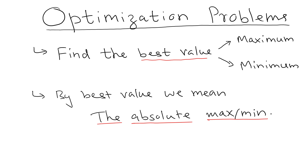When we say best value, we mean the absolute maximum or absolute minimum — not the local maximum or local minimum. This is something you have to be very careful about. When we say the optimum value, that always means the absolute maximum or absolute minimum.